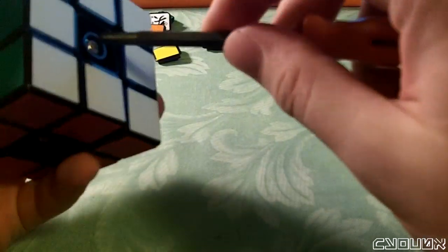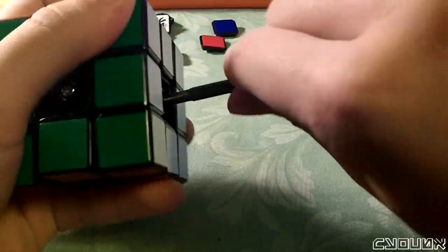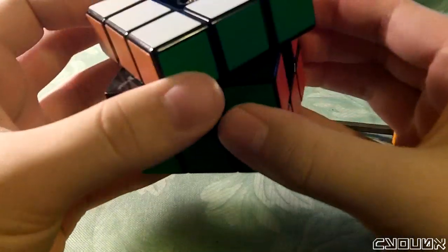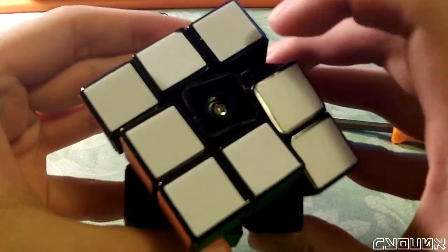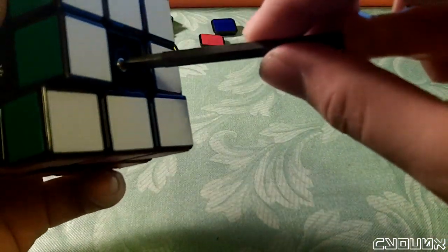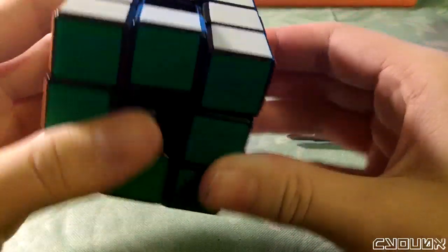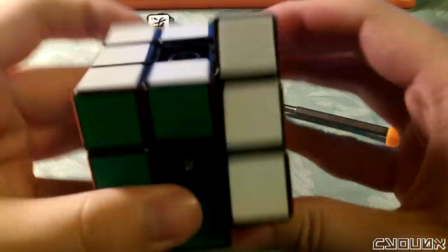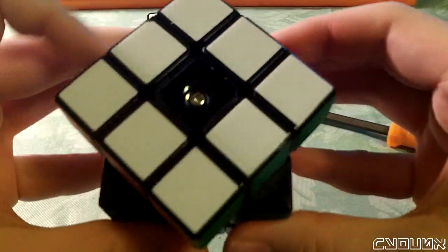So to tension it properly, you tighten it a little bit at a time, and you keep testing it. Now you see it still flexes, so that means it's still too loose. You just keep doing this. So it's still too loose. That seems to be really good.